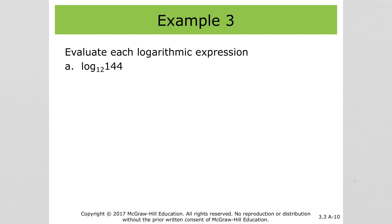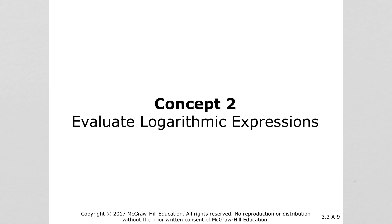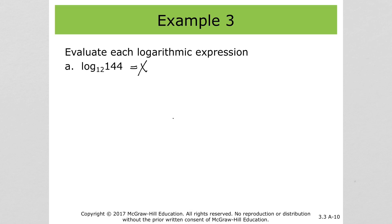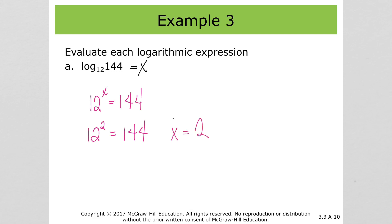Here we go with something that makes this make a little more sense why we're doing it. We've got log base 12 of 144 equals x — putting the equals x there so we can rewrite just like we've been doing. So we've got base 12 to the x power equals 144, and what it's asking us to do is solve for x. Well, we know that 12 squared is 144, so that tells us that x is 2.